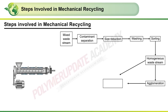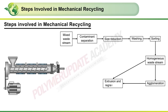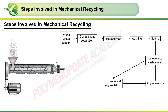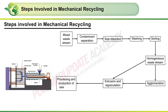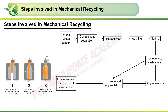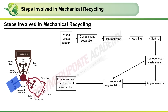The extrusion stage involves the charging of small pellet-shaped agglomerated chunks into the hopper and its subsequent conversion into small pellets that can be used by further processes such as injection, blow, rotational, etc.